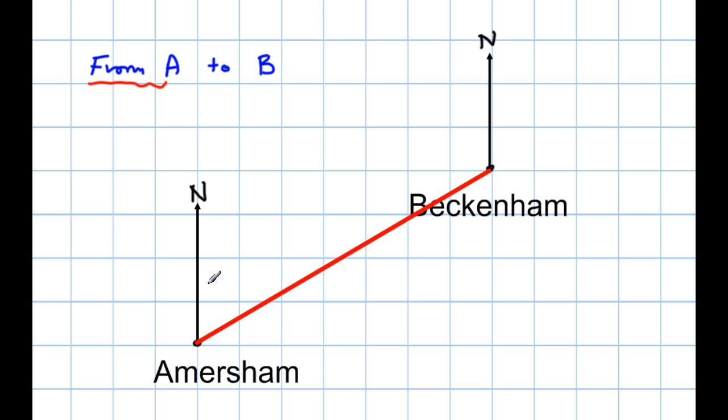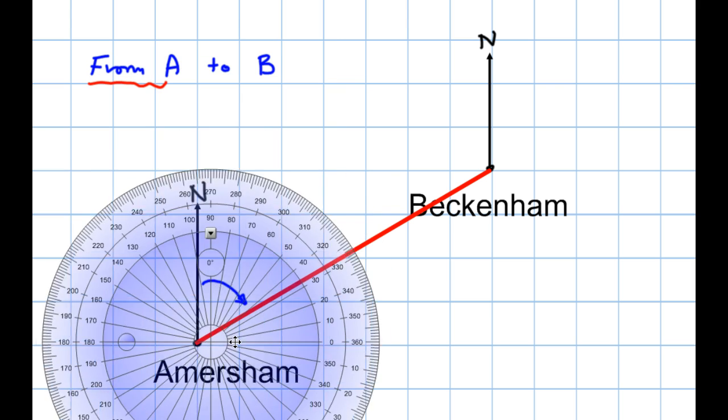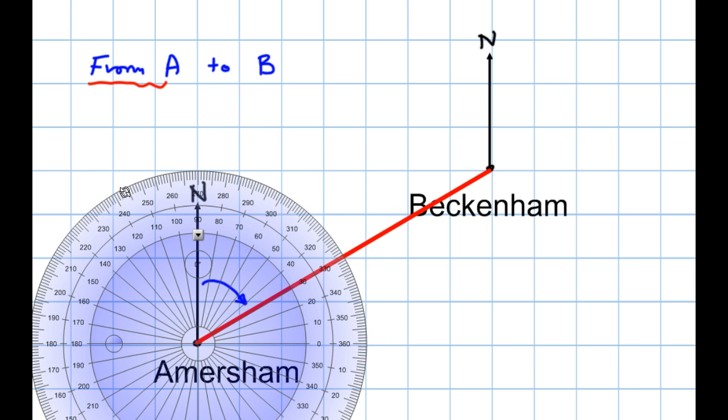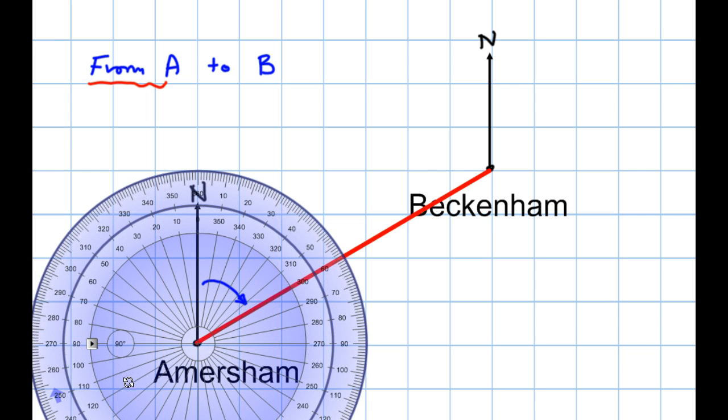Now, I'm going to measure the angle that I have to turn through from north. So, let's get my protractor out. Let's make that a 361, it's a bit easier with that. Then I centre it on Amersham. I turn it so that 0 degrees is due north. Now, I'm going to measure the angle. And let's have a look. What is the angle I turn through from north? Well, it looks like it's bang on 60 degrees. So, the bearing from Amersham to Beckenham is 60 degrees.